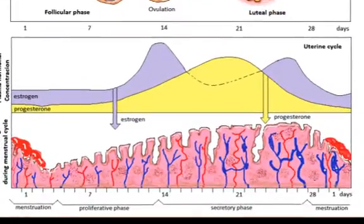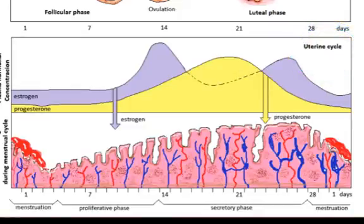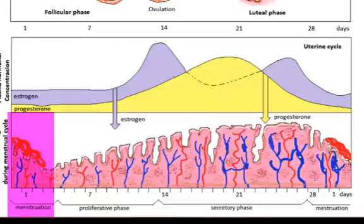Now for the menstrual cycle, sometimes known as the uterine cycle. Cyclic changes occur in the uterine endometrium in response to ovarian hormones in the blood. The menstrual phase is considered days one through five: the uterus sheds all but the deepest layer of the endometrium, and detached tissue and blood pass out through the vagina as the menstrual flow.